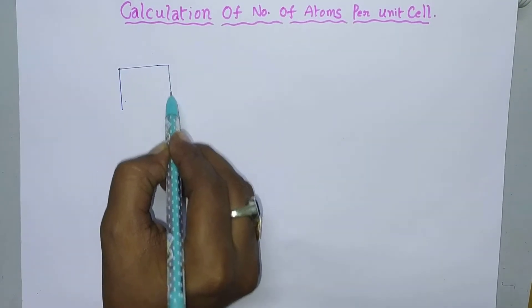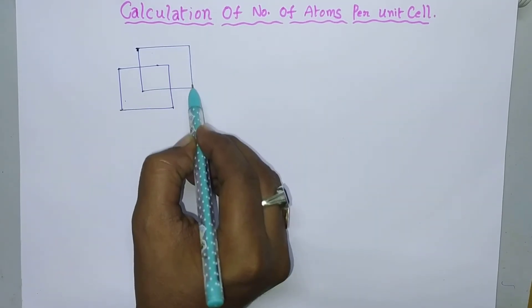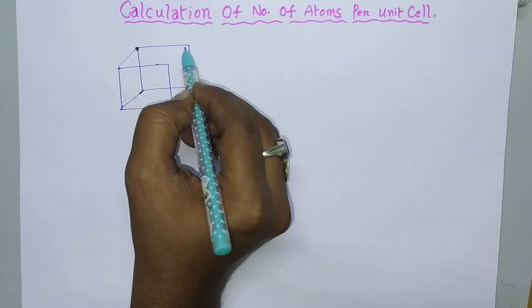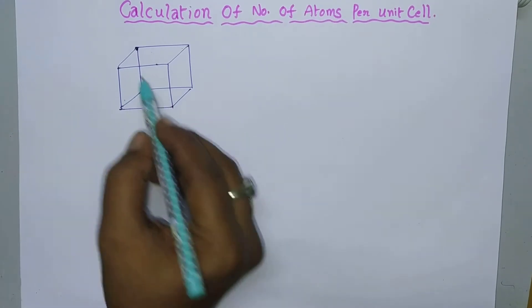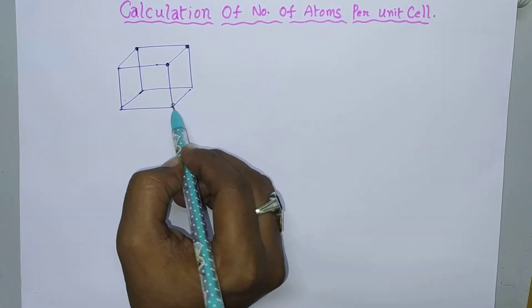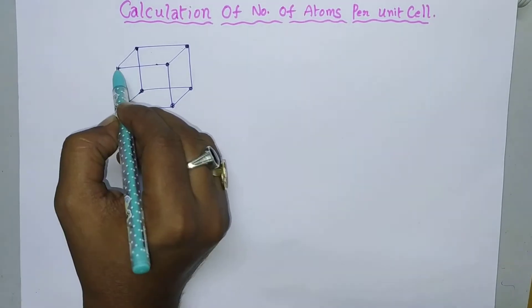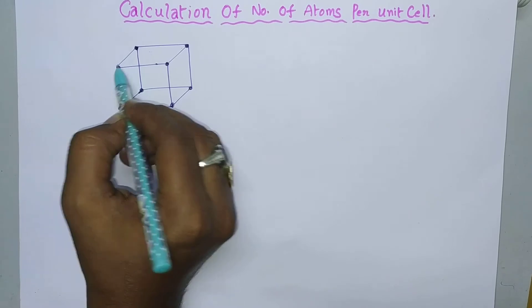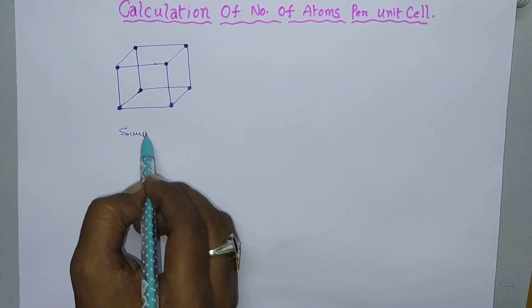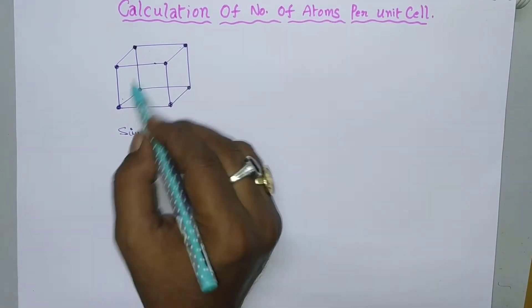The first is the simple unit cell. In a simple unit cell, the lattice points — that means the atoms or ions — are present at the corners only.